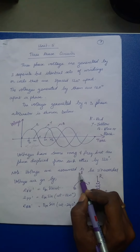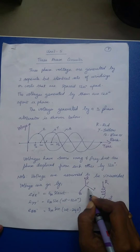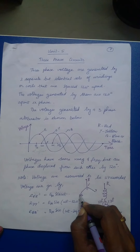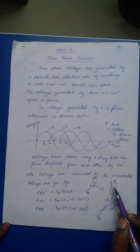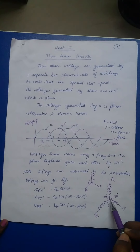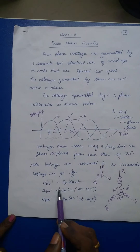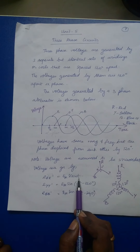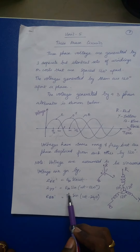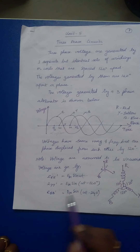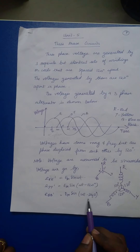One end is termed as R and the other end as R-dash; similarly the other end for Y phase as Y-dash and for B phase as B-dash. The voltage across a winding is termed as phase voltage. The voltage equation is: E_RR' = Em sin(ωt), E_YY' = Em sin(ωt − 120°), and E_BB' = Em sin(ωt − 240°).